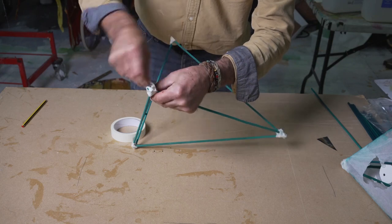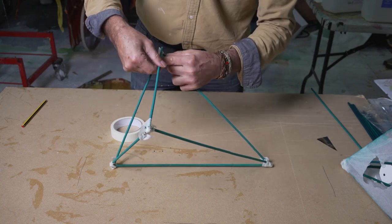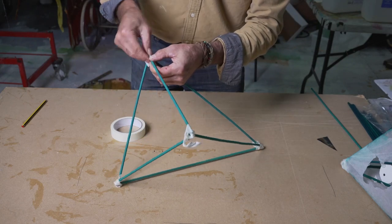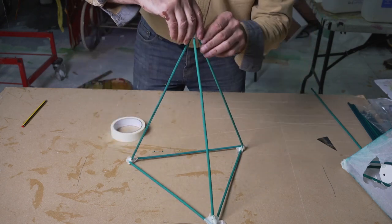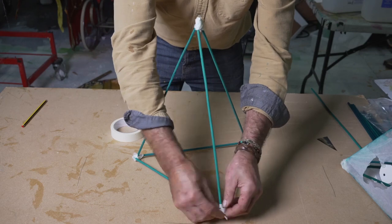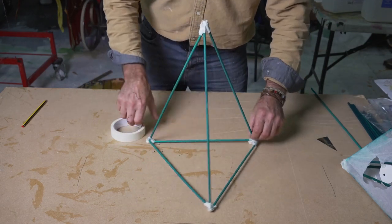And the final one on the other side like that. Go around, check all your joints, give them a really tight squeeze to make sure it's nice and strong. And there you go—one triangular base pyramid.